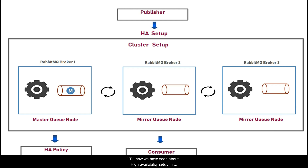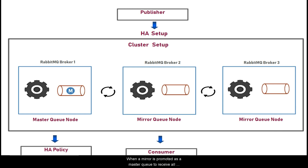You should also know about queue failover after the high availability setup. When a mirror queue is promoted as a master queue to receive all publish and consume requests, we call it a queue promotion.